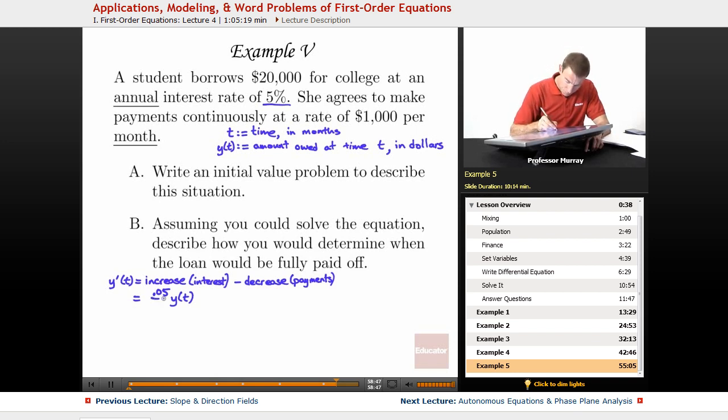So I'm going to put 0.05 divided by 12 there. That reflects the monthly interest rate would be 0.05 divided by 12. And then the decrease is coming from her payments. Now the amount of payments she's making is $1,000 per month. So I'll put minus 1,000 here.